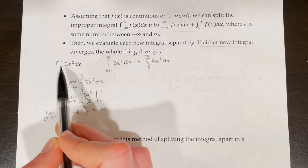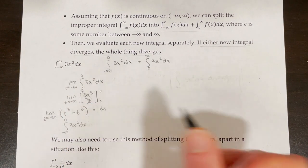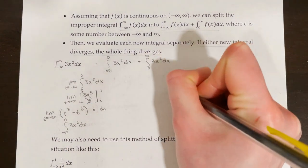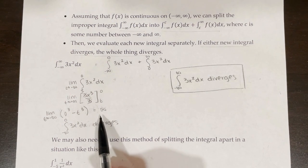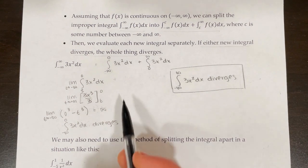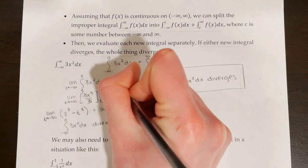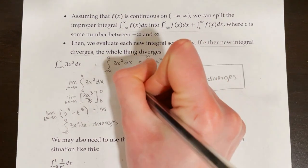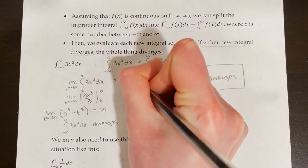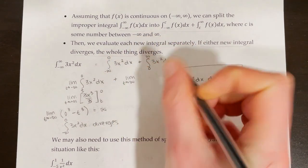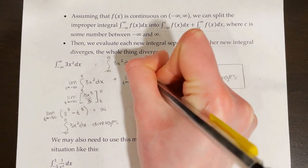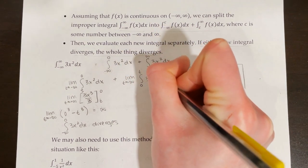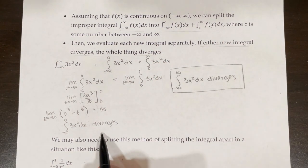Therefore, the integral from negative infinity to infinity of 3x squared dx diverges. If we had not gotten plus or minus infinity for the first part, we would have had to evaluate the second portion: the limit as t approaches positive infinity of the integral from 0 to t of 3x squared dx. However, since this one diverged, we don't need to do that extra step.